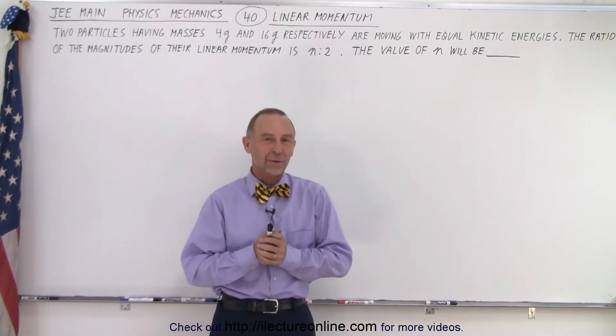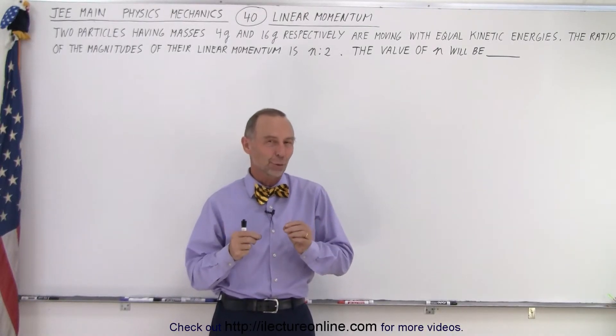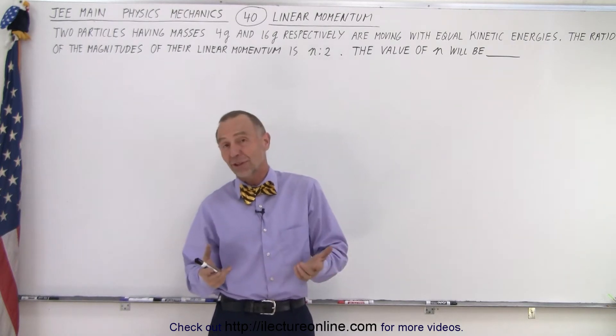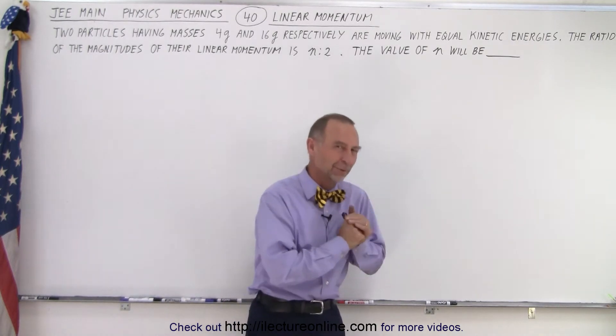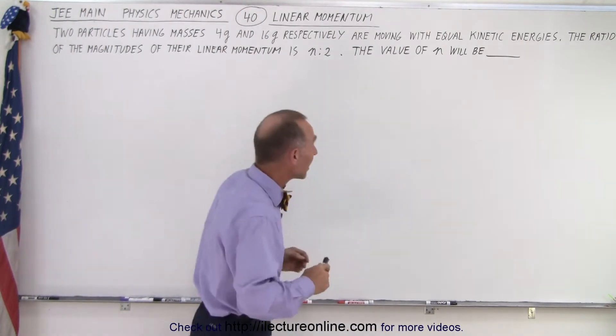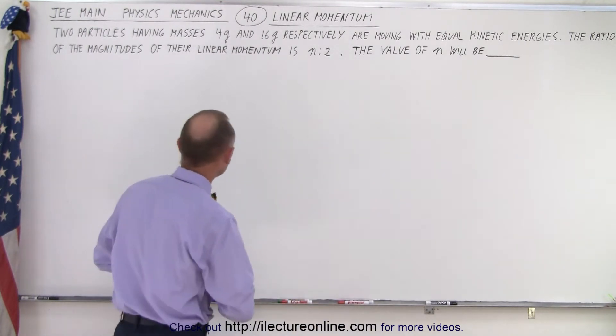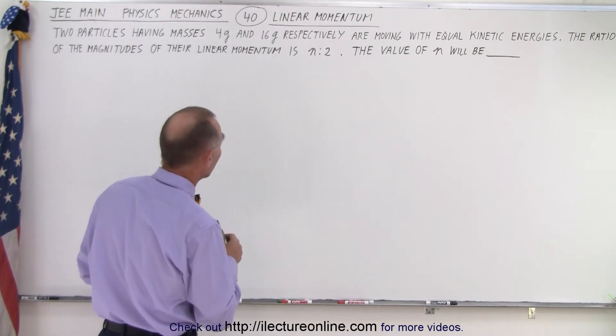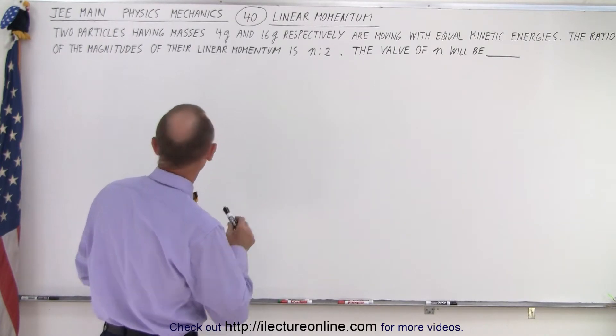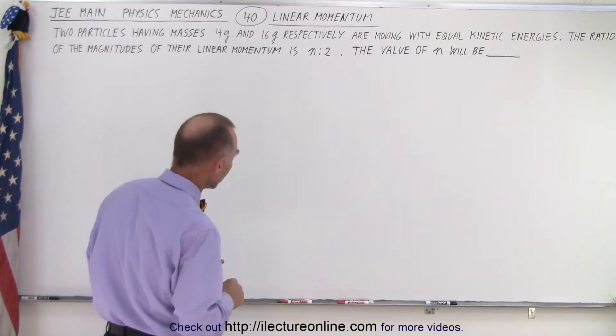Welcome to our lecture online. Now here's a problem that you could probably do rather quickly, which is a good thing because you might have spent more than 3 minutes per problem on some of the previous problems. So what is this problem about? It deals with linear momentum. It says that two particles having masses of 4 grams and 16 grams respectively are moving with equal kinetic energies. The ratio of the magnitudes of their linear momentum is n to 2. The value of n will be.